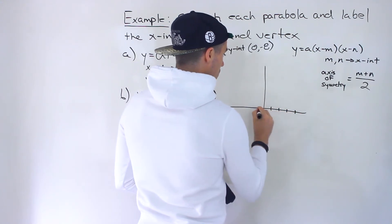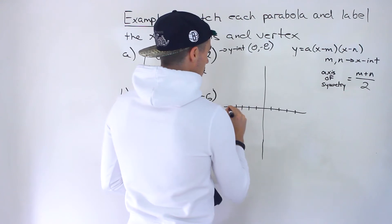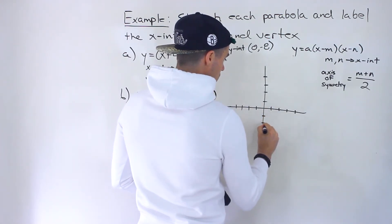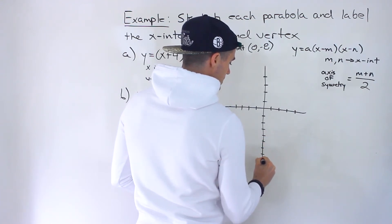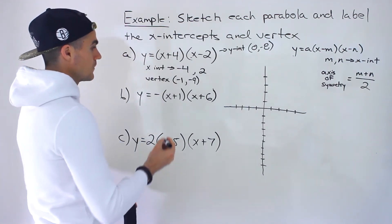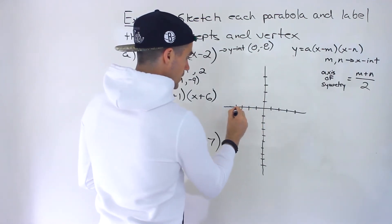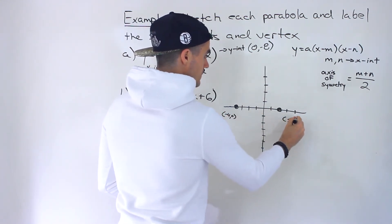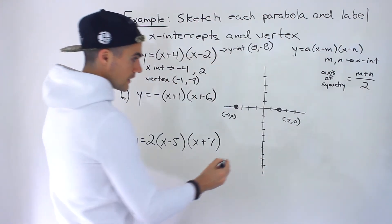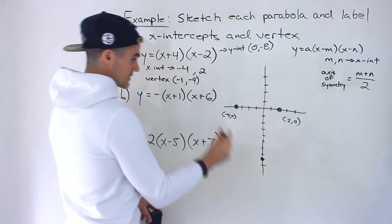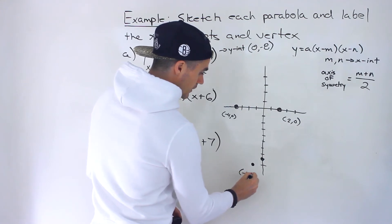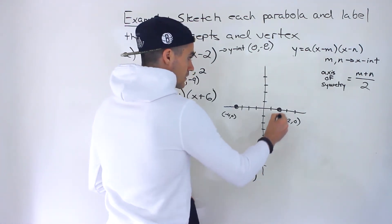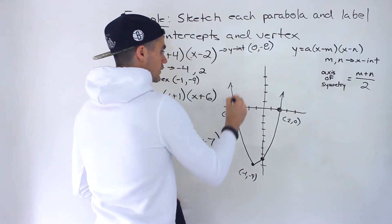Setting up the graph with axes going out to 4 in positive directions and down to 9 for the y-axis. The x-intercepts are at negative 4 comma 0 and positive 2 comma 0. The y-intercept is at 0 comma negative 8. The vertex is at negative 1 comma negative 9. From these points you can tell what the shape is going to be like, so the parabola ends up looking like that.